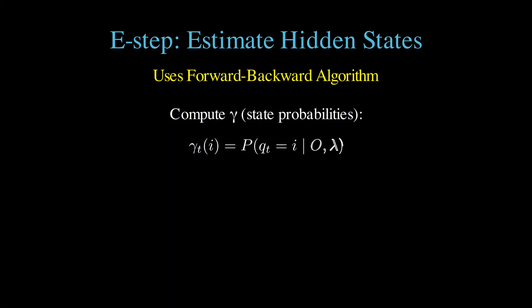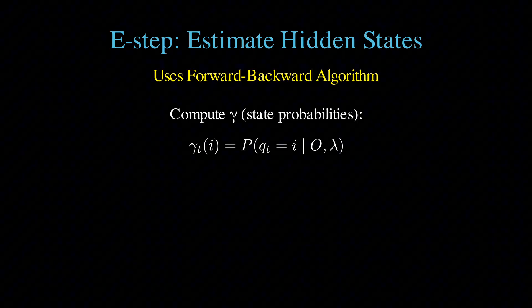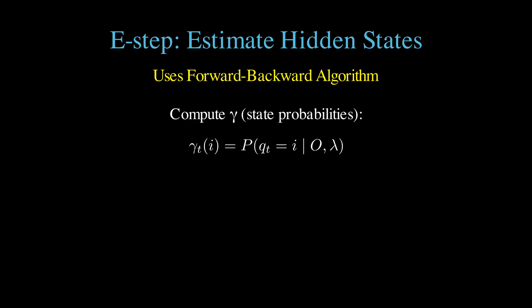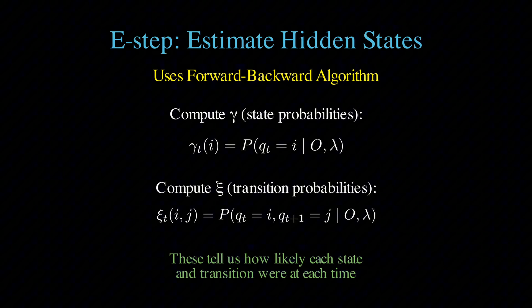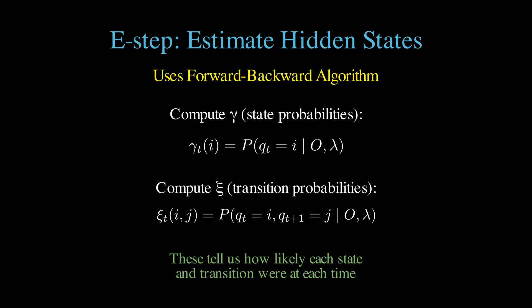Remember that forward-backward gives us gamma t of i, which is the probability of being in state i at time t, given all our observations and our current parameter estimates, and it also gives us something called xi, which is the probability of being in state i at time t and state j at time t plus 1. These probabilities are crucial, because they tell us how much each transition and each emission contributed to generating our observed data.